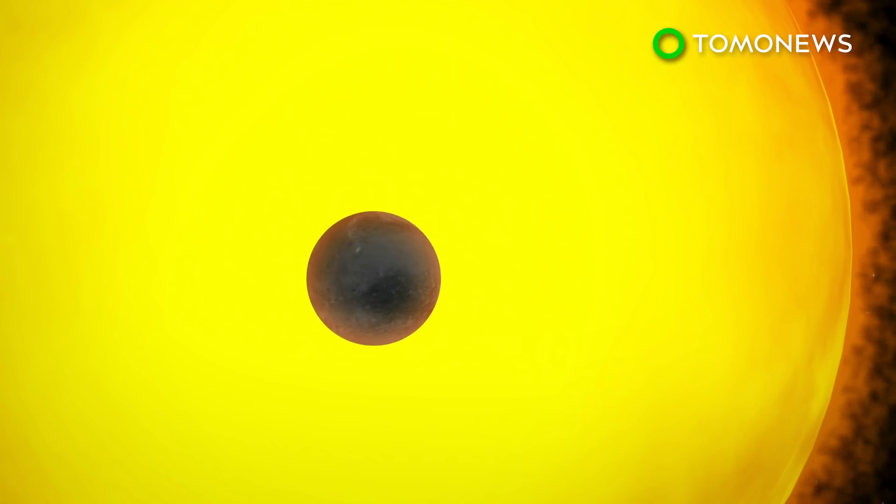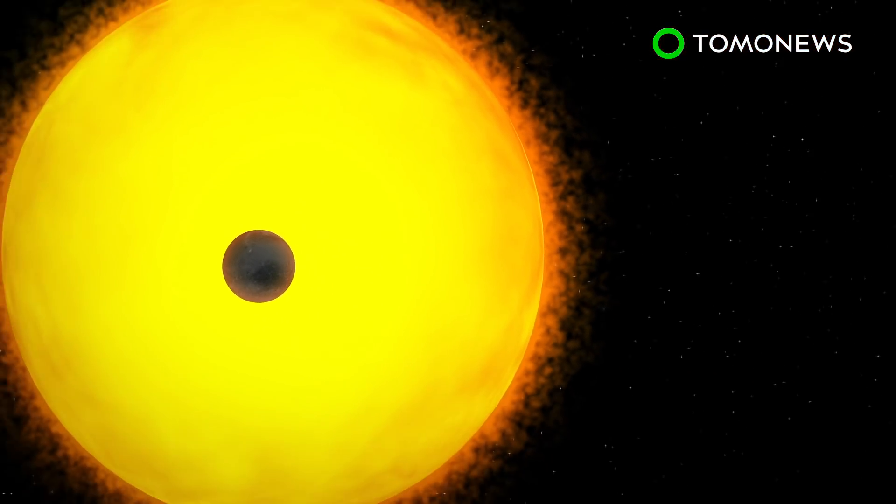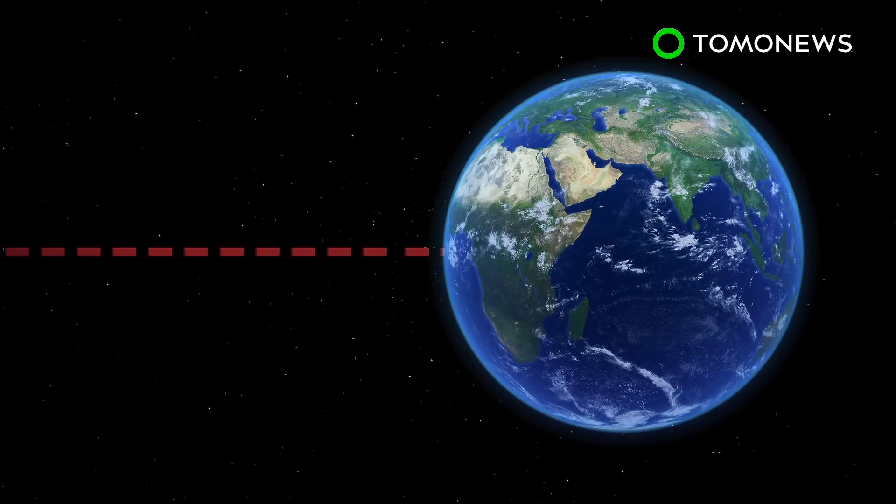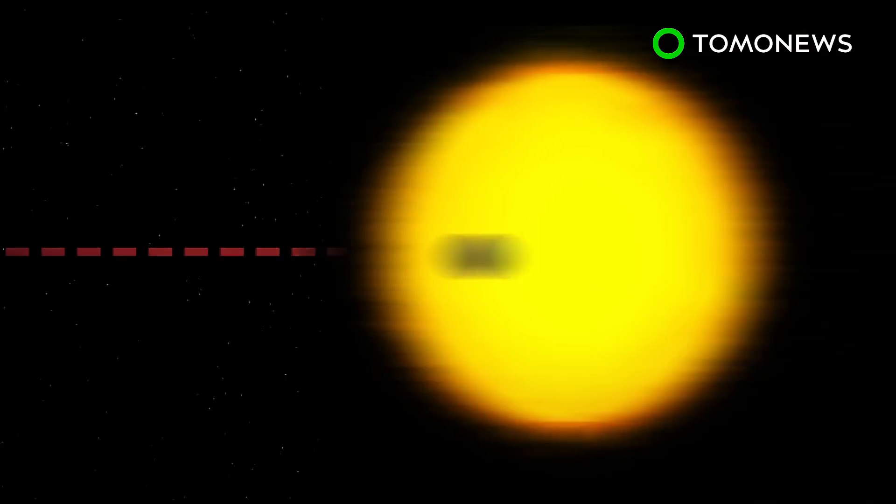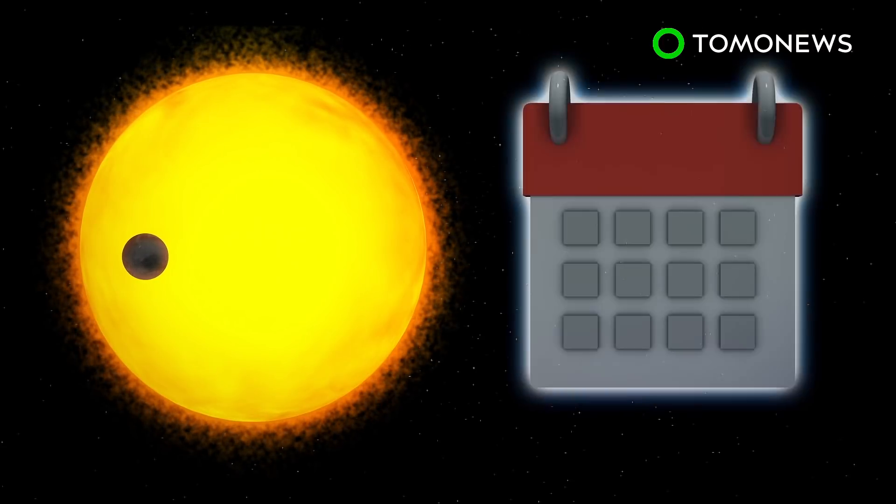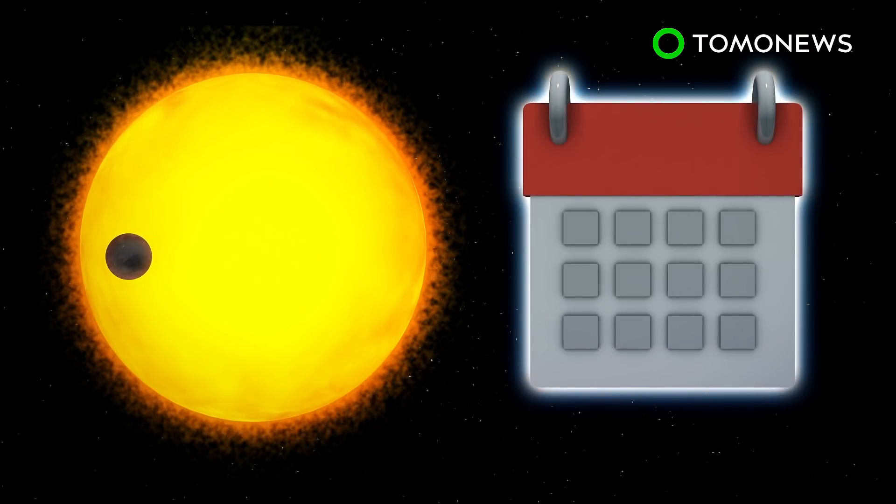Space.com reports the new exoplanet orbits a star named NGTS-4, which is around 920 light-years away from Earth. According to a University of Warwick press release, the exoplanet completes orbits of the star every 1.3 days.